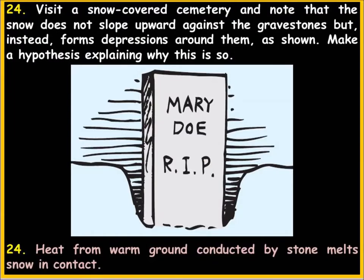Visit a snow-covered cemetery and note that snow forms a depression around gravestones rather than sloping up against them. The ground conducts heat, so heat from the warm ground is conducted by the stone and melts the snow in contact. The ground is a good conductor — it also conducts electrical charge, which is why lightning occurs.